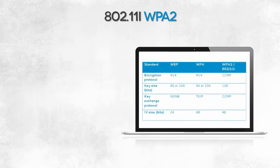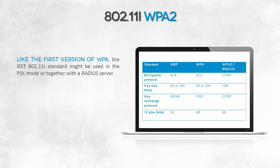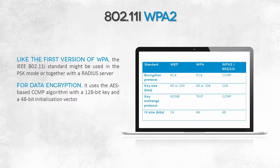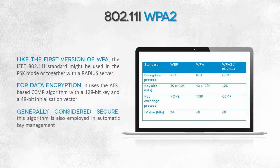Let's now briefly discuss WPA2. This protocol uses RADIUS servers, and as far as wireless networks are concerned, this is a real revolution. The RC4 algorithm, which is vulnerable to incorrect implementation, is replaced with the Advanced Encryption Standard. Each frame is encrypted using AES — this solution is known as CCMP. A brute force attack on a WPA2-protected packet would take over 2 to the 100th power operations to succeed, making it practically impossible. The protocol uses a long, random, and unpredictable 48-bit initialization vector, and key management is automatic and native — you don't need TKIP for this.